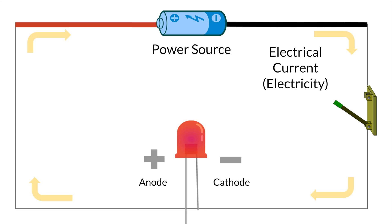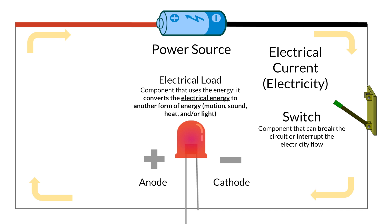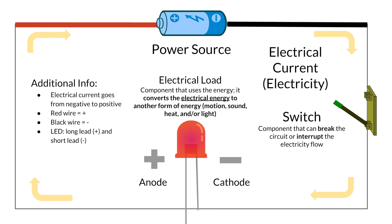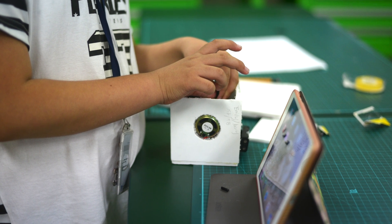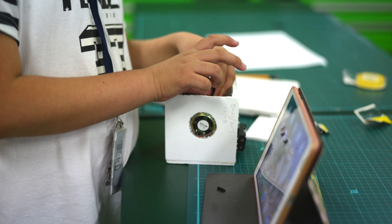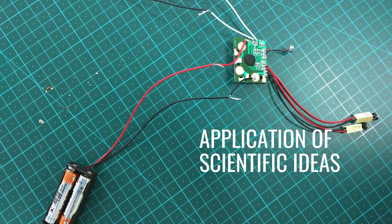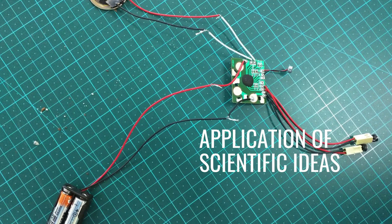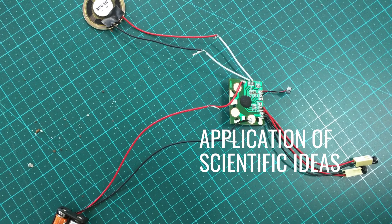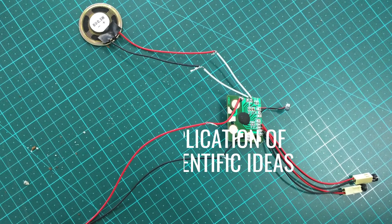Students demonstrated their understanding of how energy is moved from one place to another by electrical currents, which can then be used to produce motion, sound, heat, or light. Through exploration of electrical components, they gained the skills of applying scientific ideas to create a device that converts energy from one form to another.